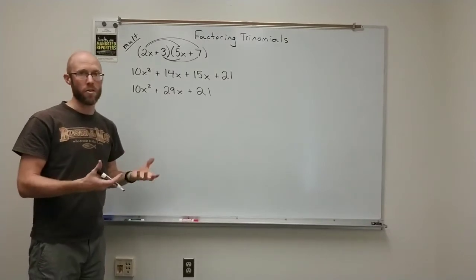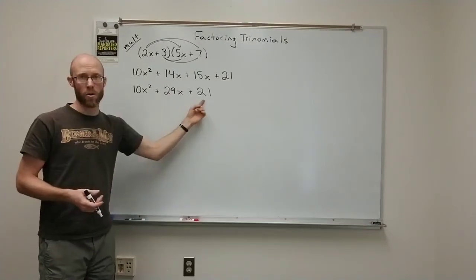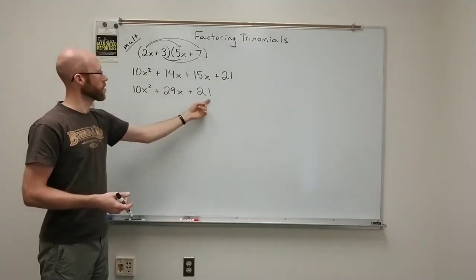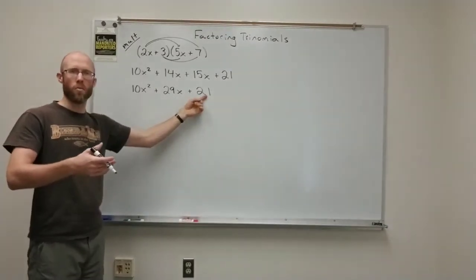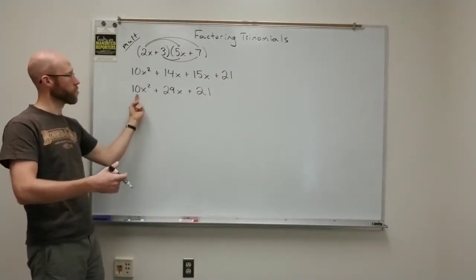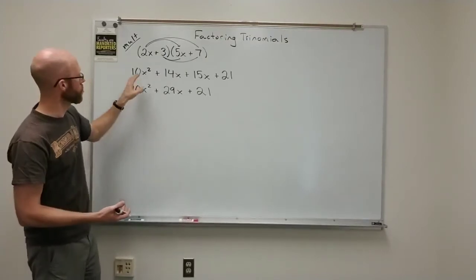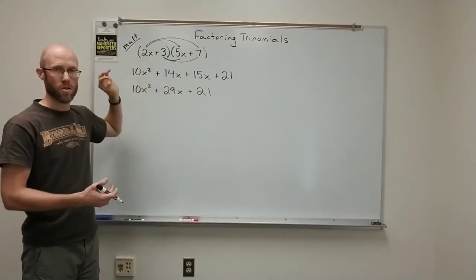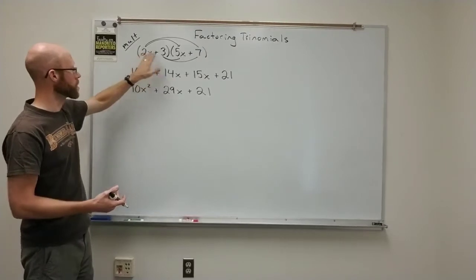But don't forget, there's other factors of both 10 and 21, right? 21 is 1 times 21 also. 10 is also 1 times 10. And so it's not always necessarily clear that it's going to be the 2 and the 5. It could be the 1 times 10 combination.